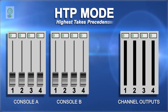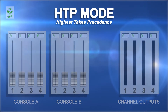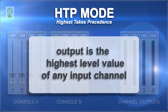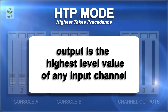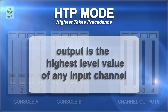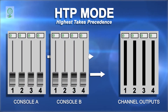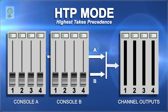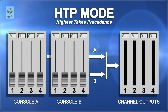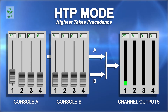The HTP, or highest takes precedence mode, will merge two or more universes into one universe by sending the highest level of each individual channel. For example, with two inputs merged in the HTP mode, if input A, channel 1 increases from 0 to a level of 25,